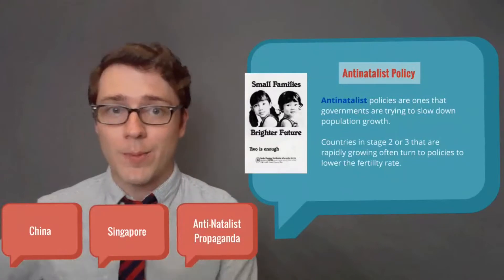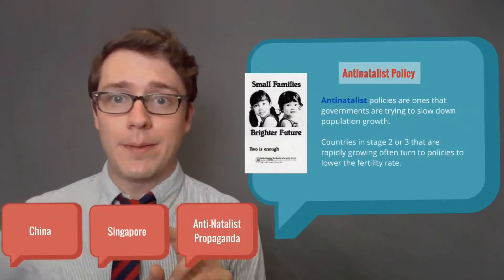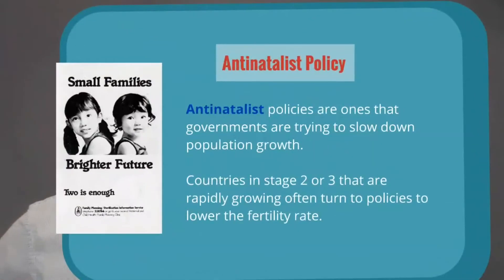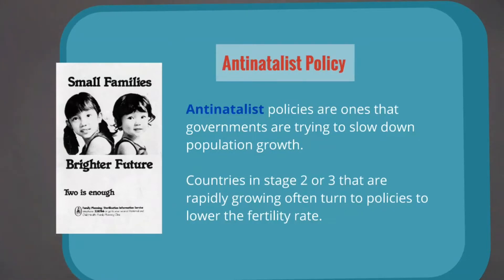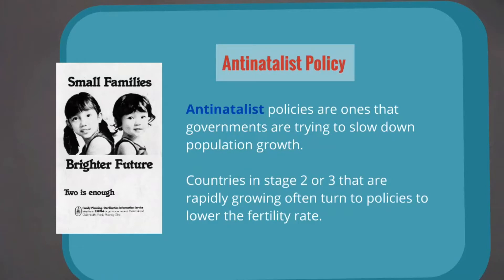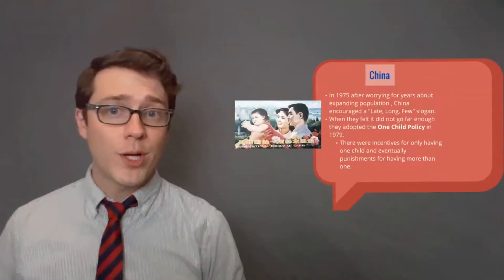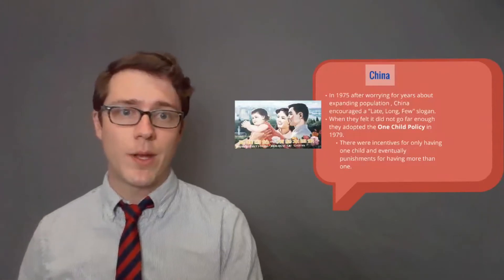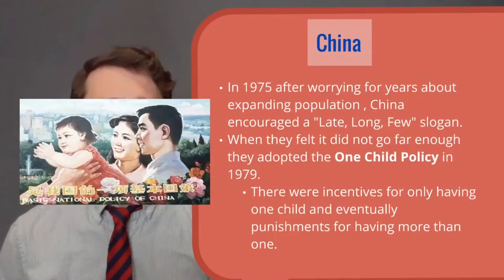That brings us to anti-natalist policies — the opposite — when governments are trying to slow down their growth. Countries in stage two or three of the demographic transition model are rapidly growing, and they often turn to policies to lower the fertility rate and have people have fewer kids. Here's an ad from Singapore that says 'small families, brighter future — two is enough.' This is before they tried to encourage growth. Now we want to look at the most famous example of anti-natalist policies, which comes from China during the communist era.